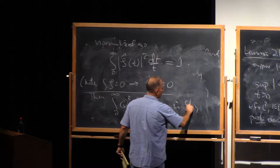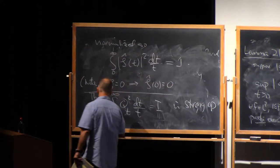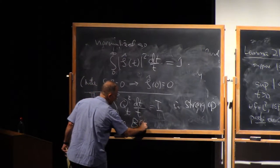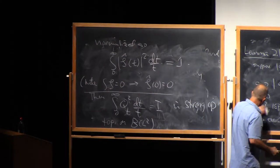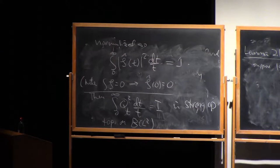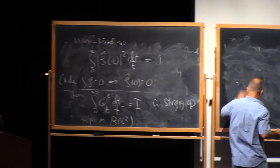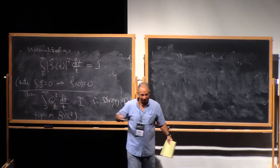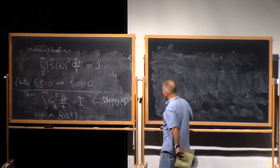In the strong operator topology on the space of bounded operators on L2. I'll explain what that means when we prove this. So this thing is called the Calderon reproducing formula. It's a resolution of the identity.